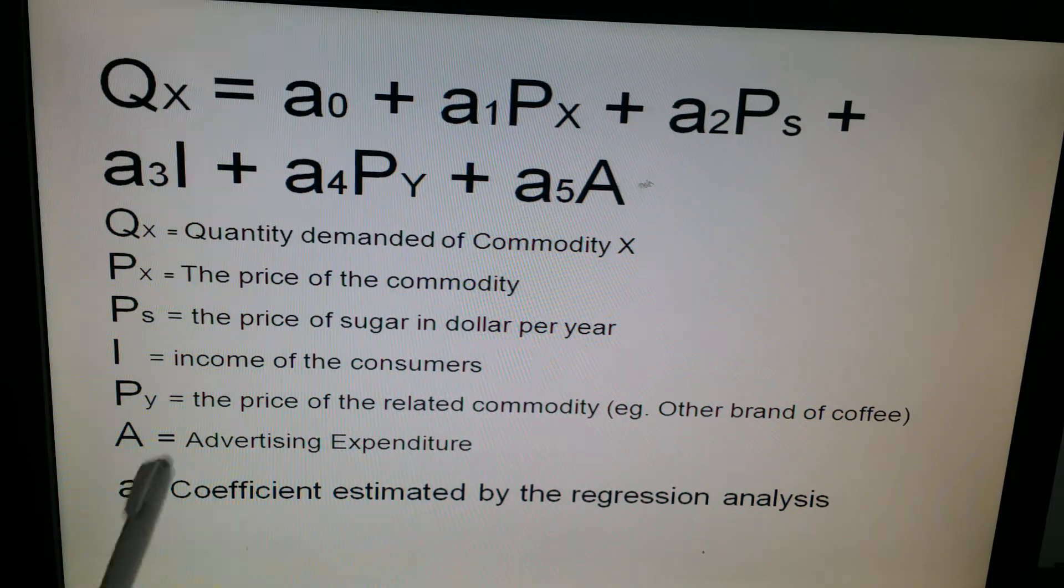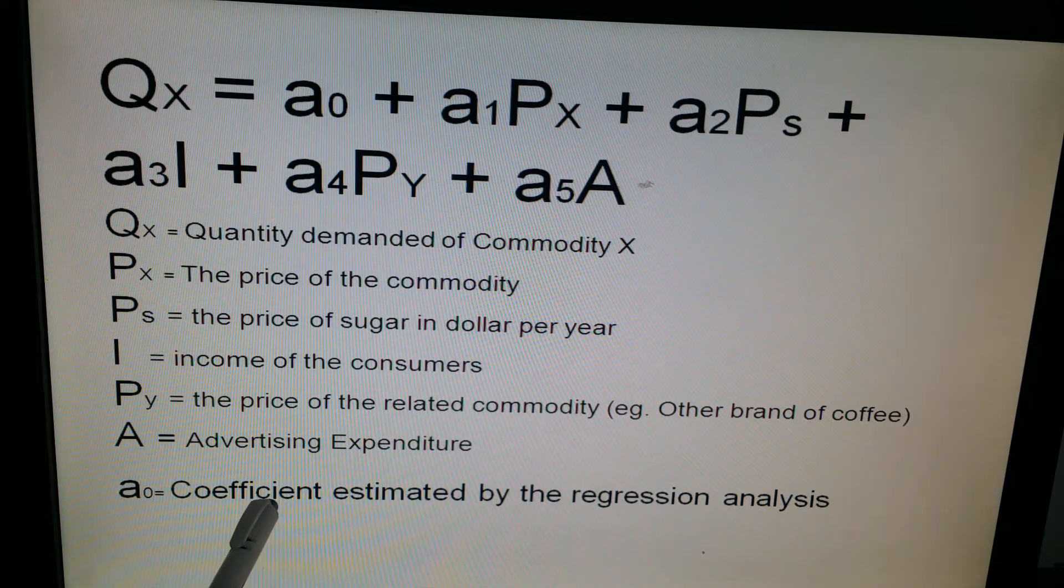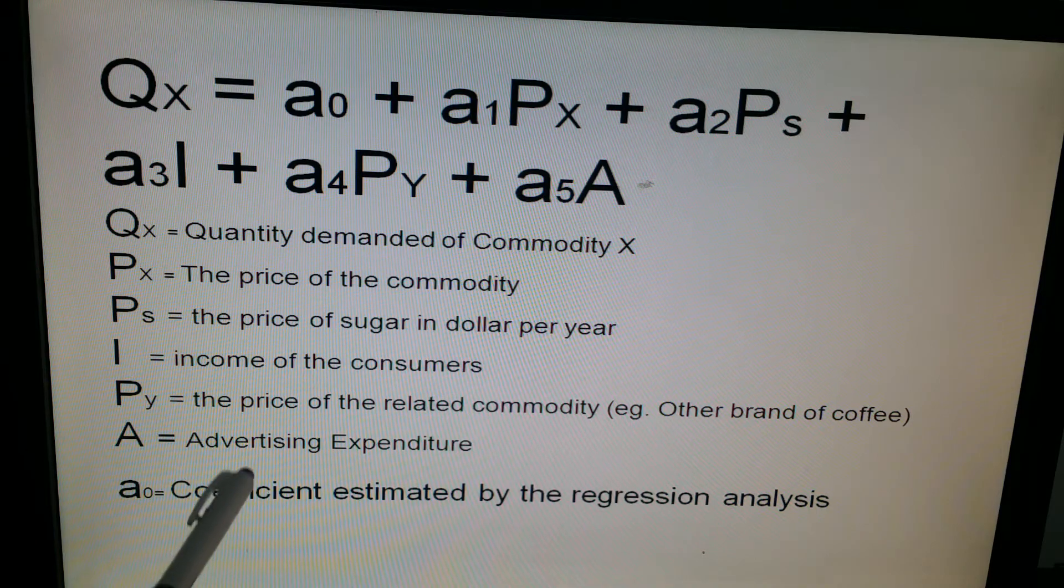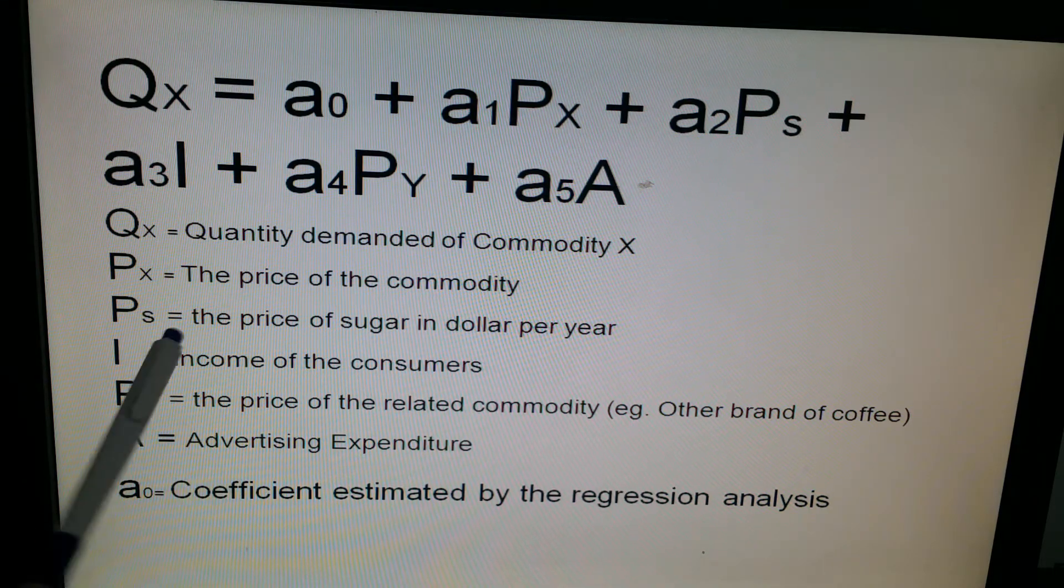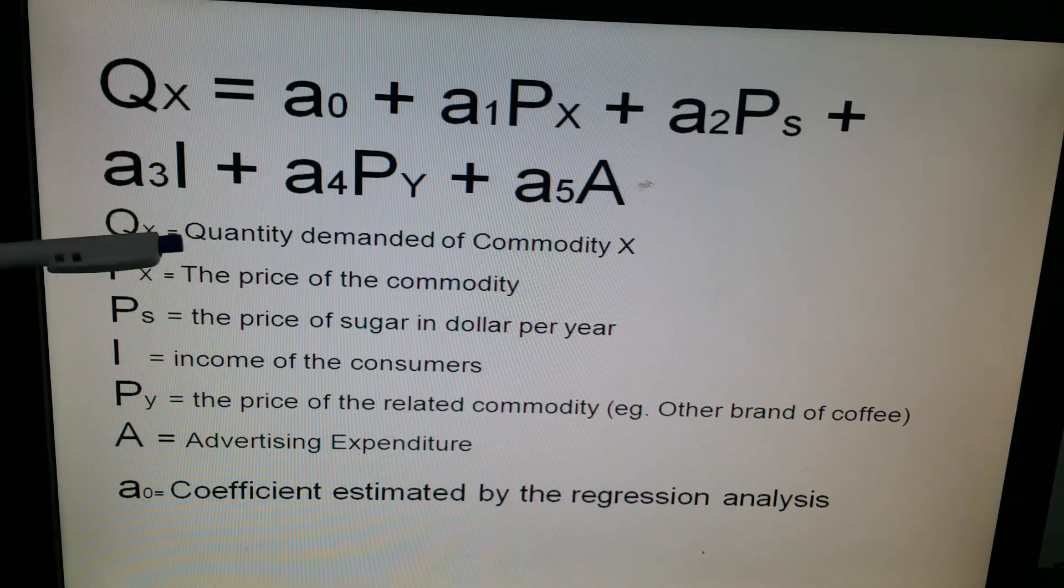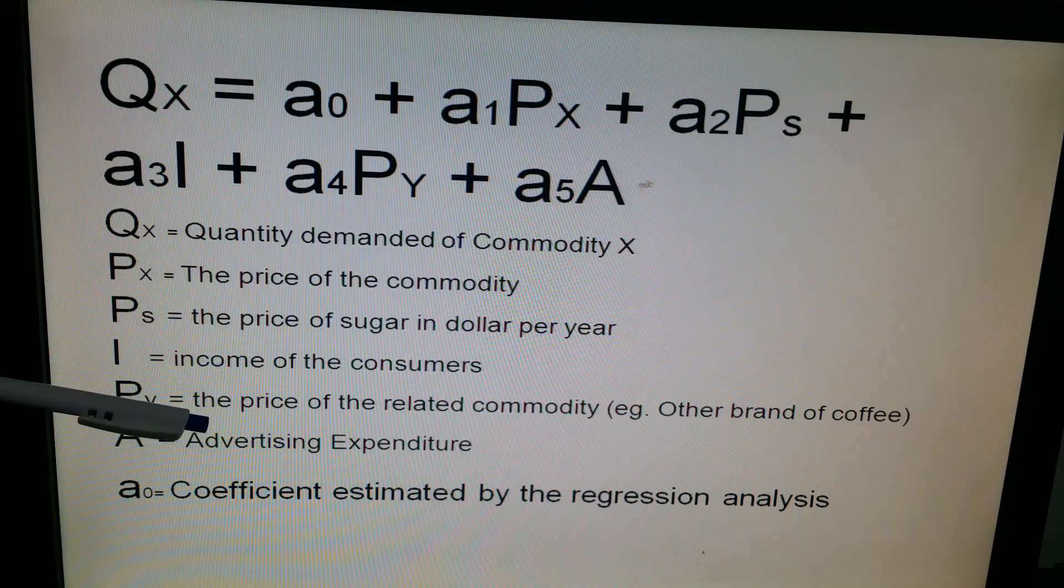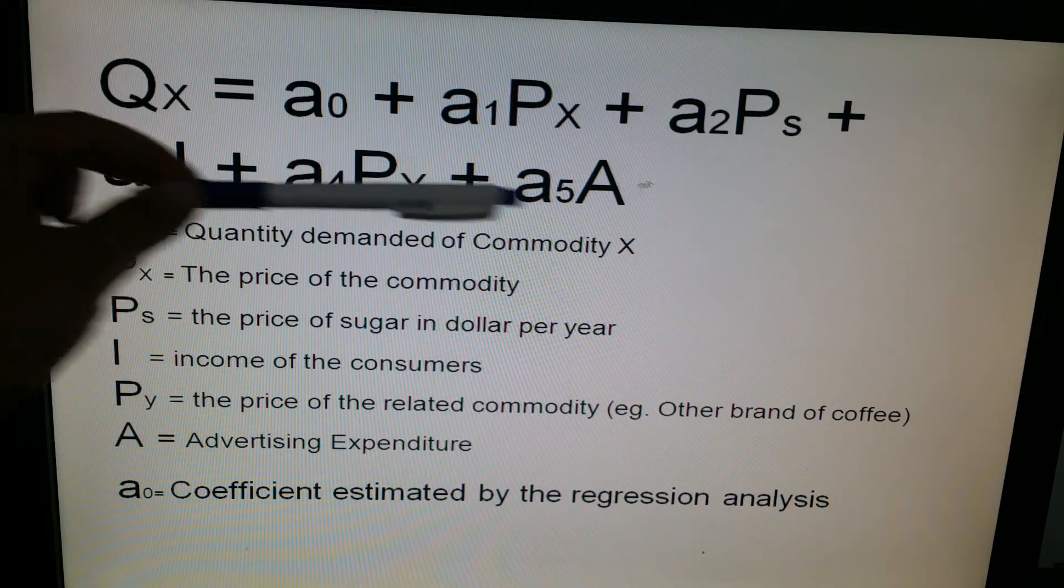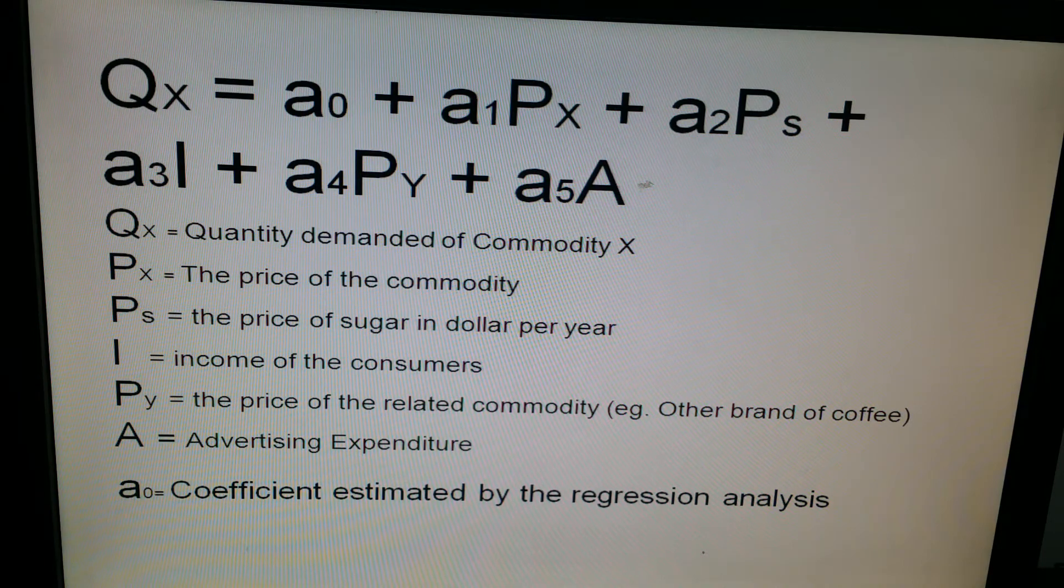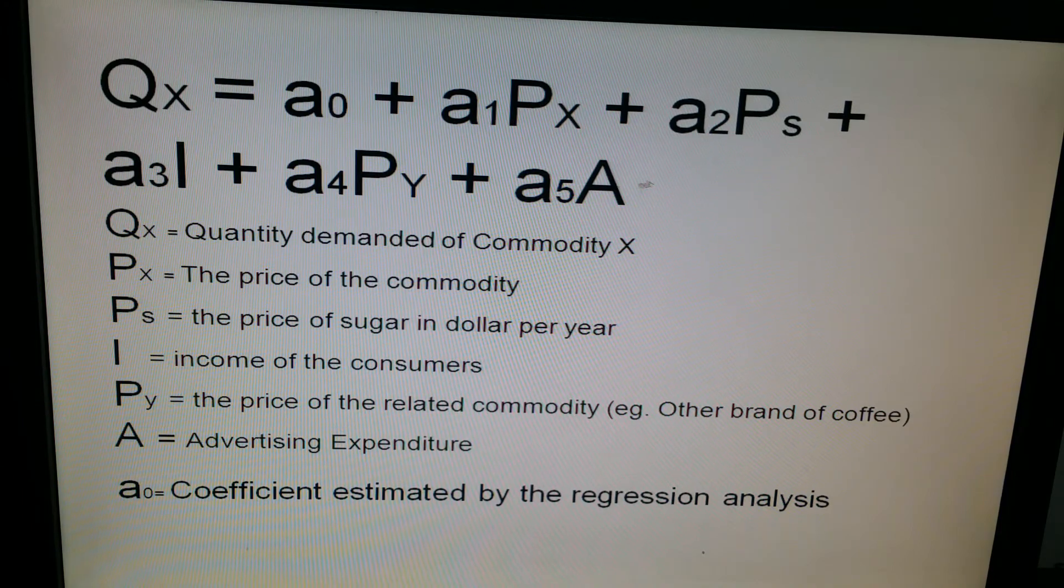And another factor which determines demand is advertising. A lot of things we purchase, we purchase because we do it under the influence of advertising. So these are the various factors that have an impact, and these factors are shown here in this particular equation. So this is one equation, right? This is one equation. This is for one particular commodity.